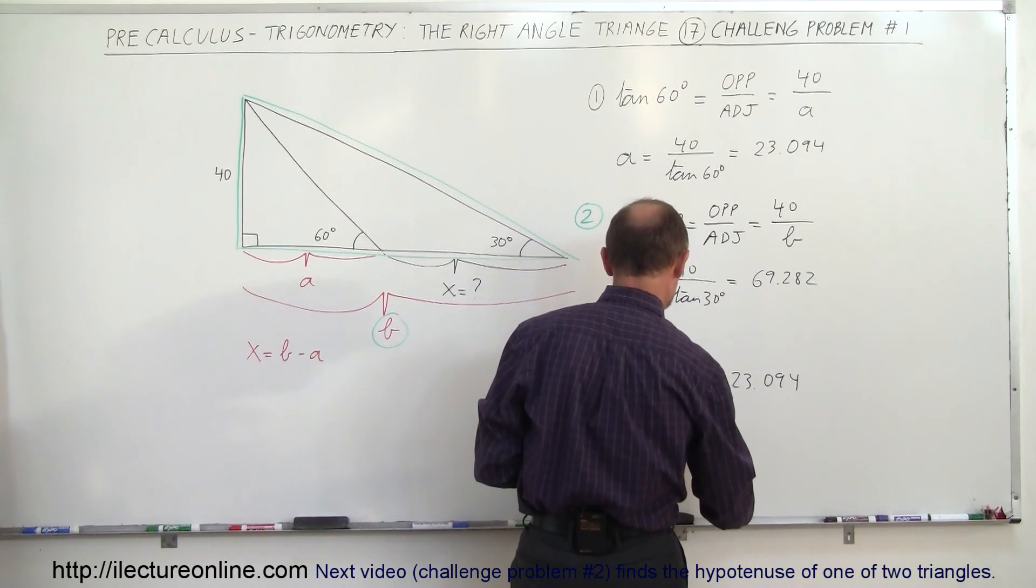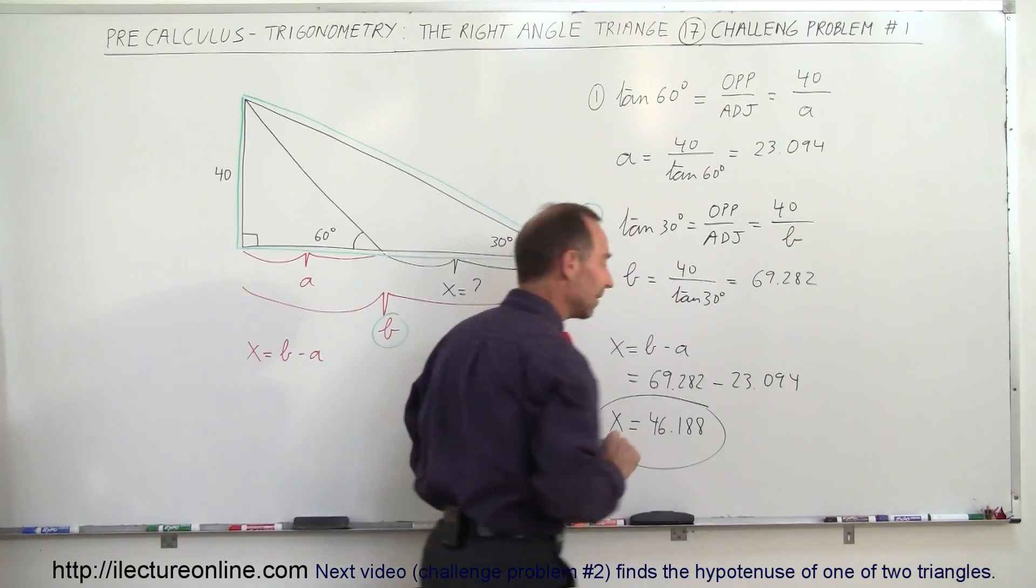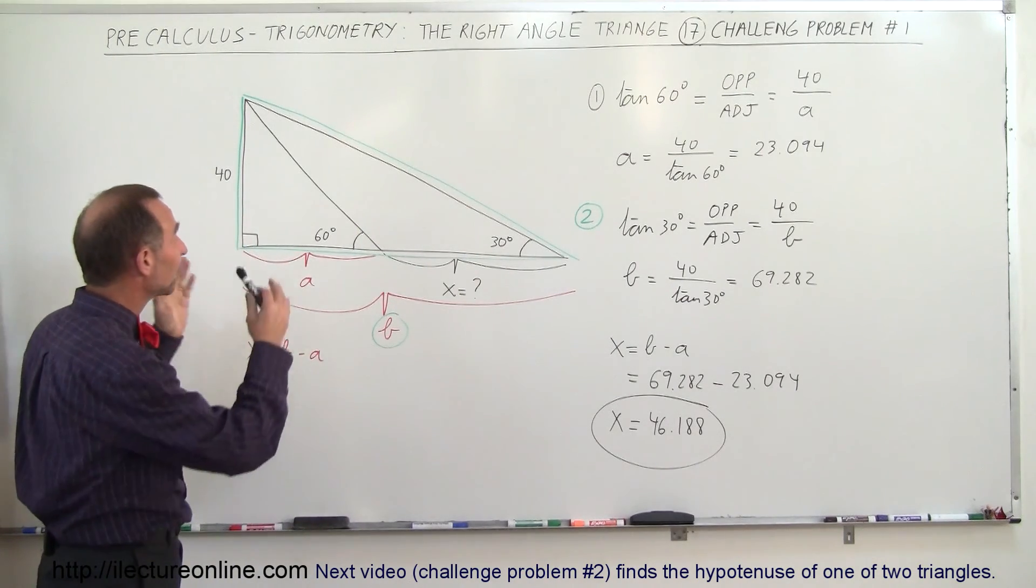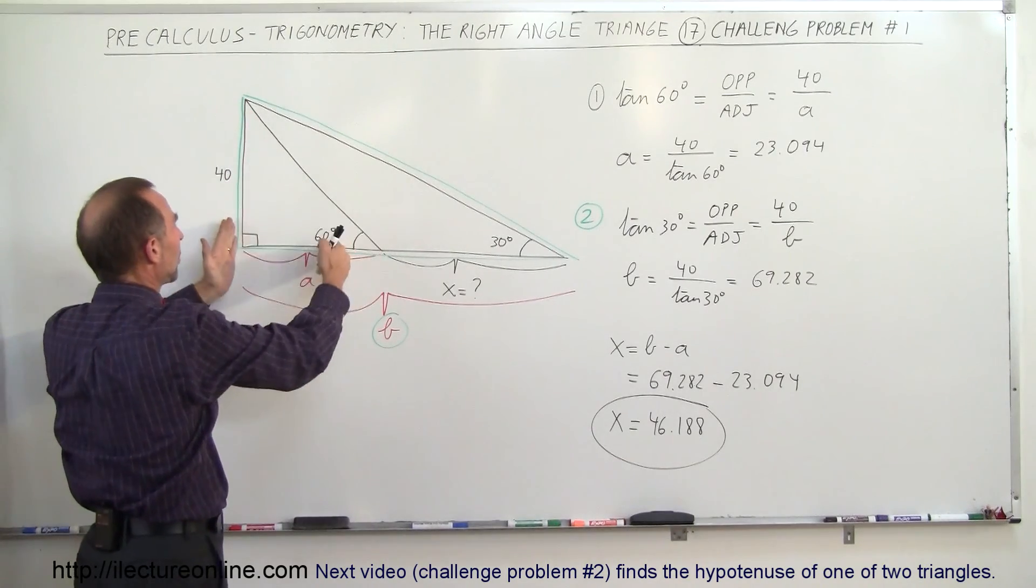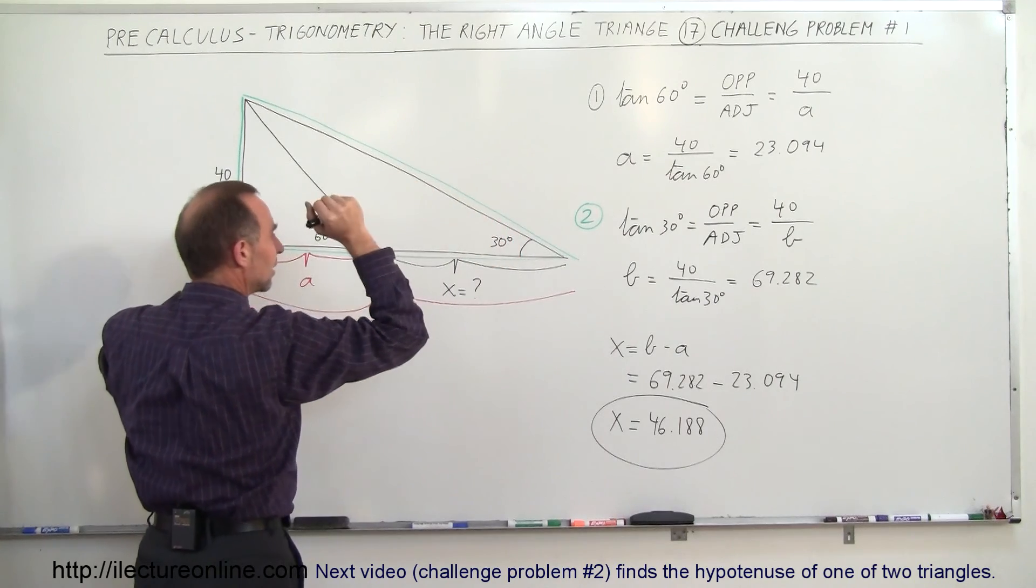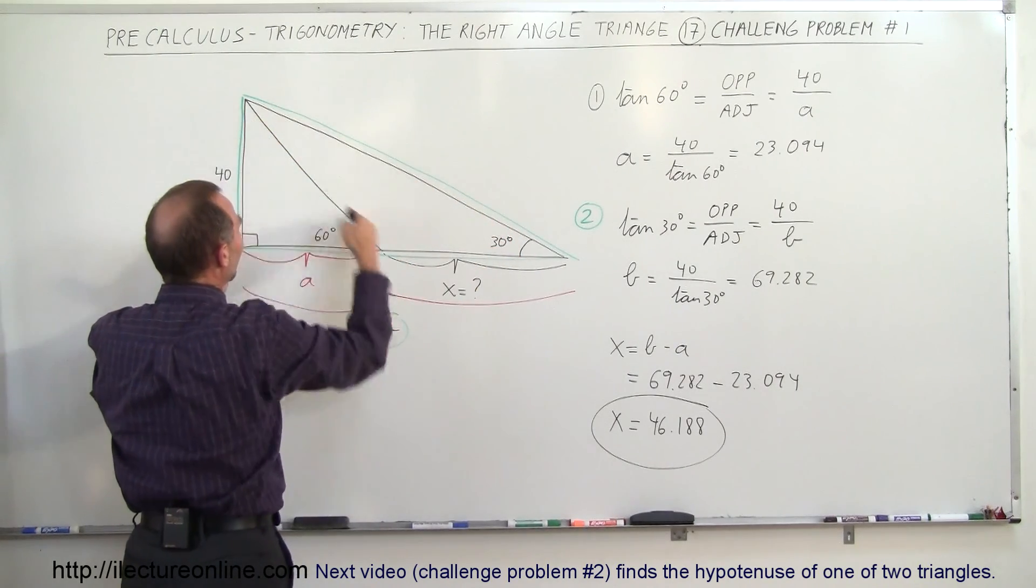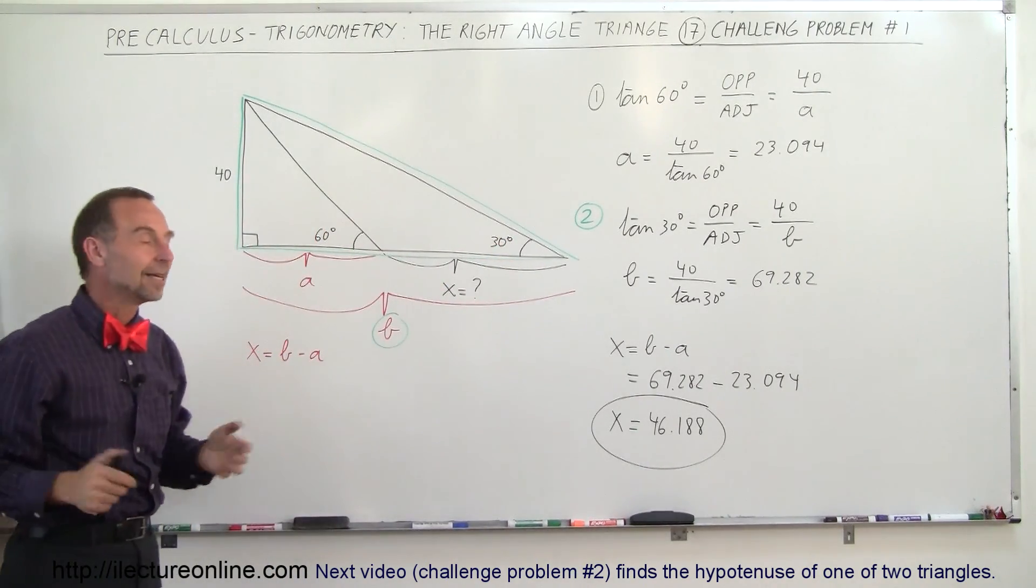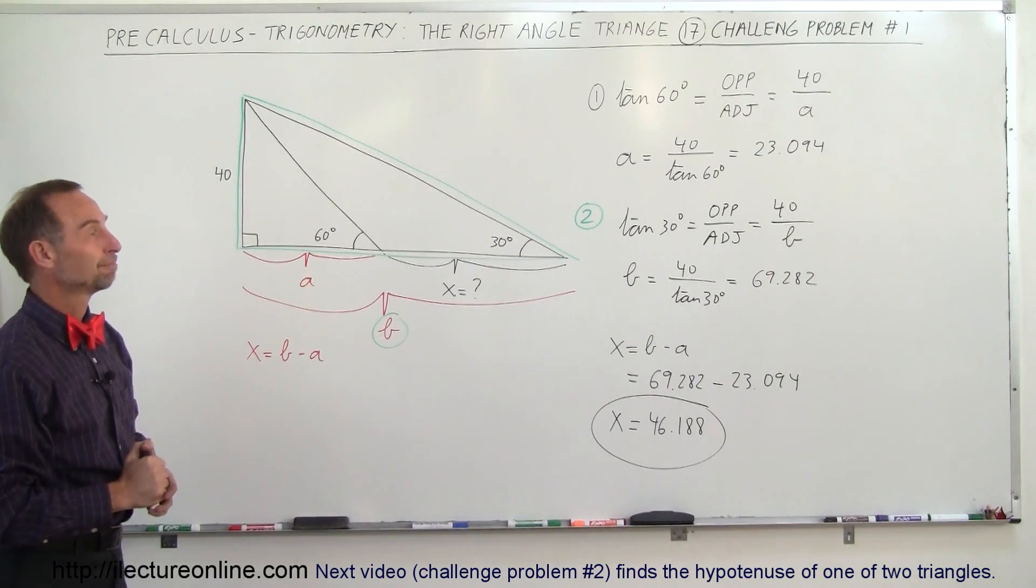And that's how we do that. So notice what you have to do is recognize the various triangles to work with. We first work with the smaller triangle, then we work with the bigger triangle. We use this angle for the first triangle, we use this angle for the second triangle, found A and B, subtracted the two, and you find X. And that's how we do that.